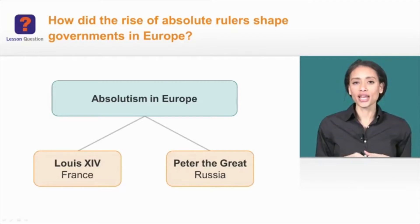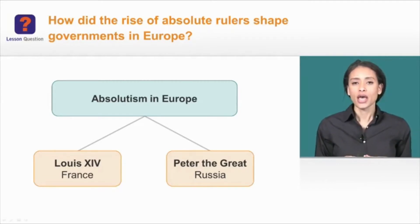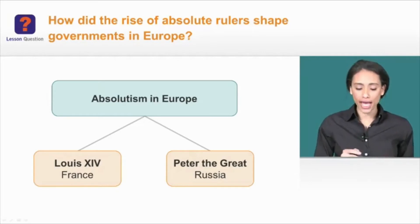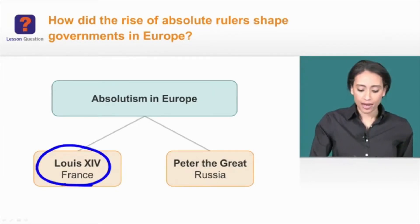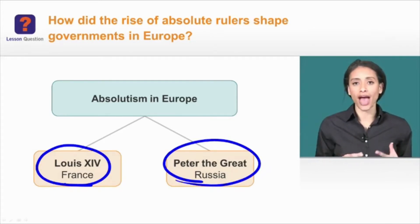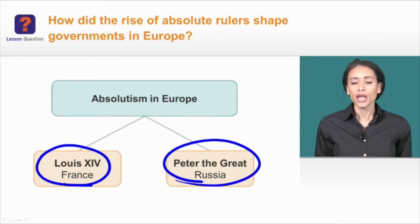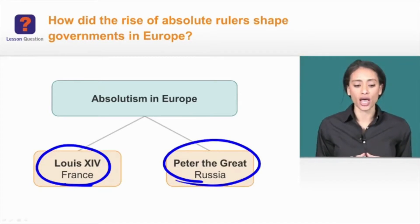In today's lesson, we're studying absolutism in Europe during the 15 and 1600s. We'll particularly look at two case studies: Louis XIV of France and Peter the Great of Russia, in order to get a better understanding of how absolute rule was in Europe during this time. By the end of today's lesson, we'll be able to answer the question: how did the rise of absolute rulers shape governments in Europe?